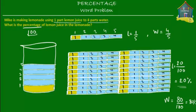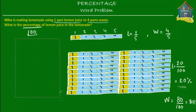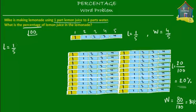But do you really have to draw it one hundred times? There's a simpler calculation. We know lemon juice is one out of five parts — that's our fraction. To convert a fraction to a percentage, we multiply it by one hundred percent. So one-fifth times one hundred percent: divide both by five, giving us one over one times twenty percent, which equals twenty percent.